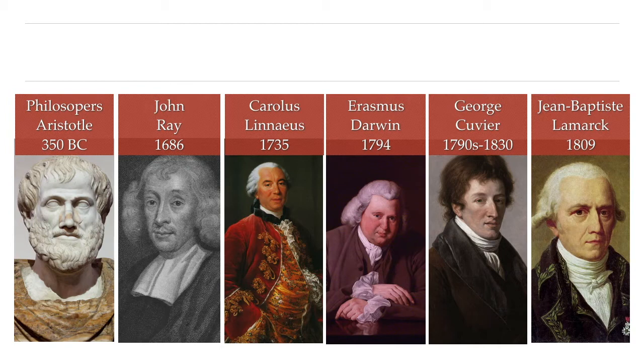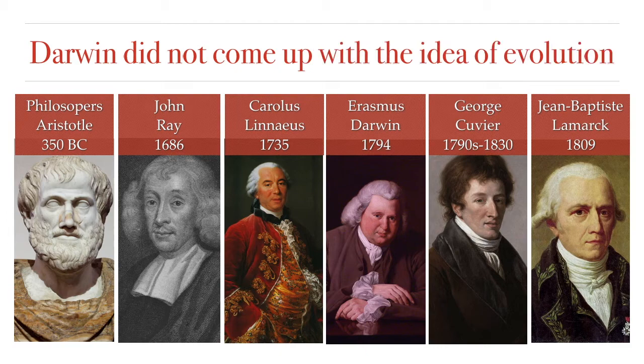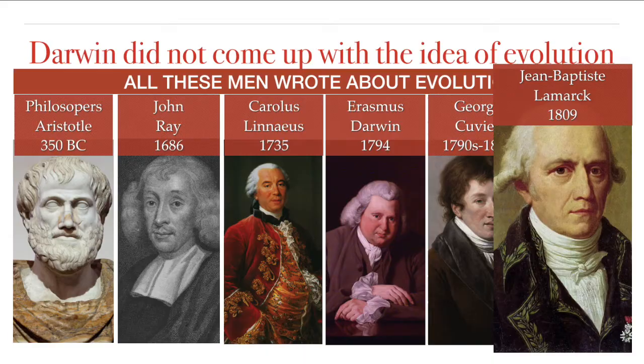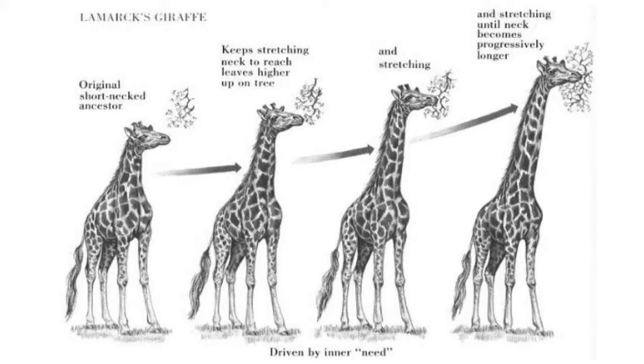But first, let me clarify one common misconception: Charles Darwin did not come up with the idea of evolution. The idea that species change over time has been around since the time of the ancient Greeks, Romans, and Chinese. What had not yet been proposed was a mechanism by which evolution occurred — that is, until the early 19th century, when Jean-Baptiste Lamarck proposed his theory of the transmutation of species, the first fully formed theory of evolution.